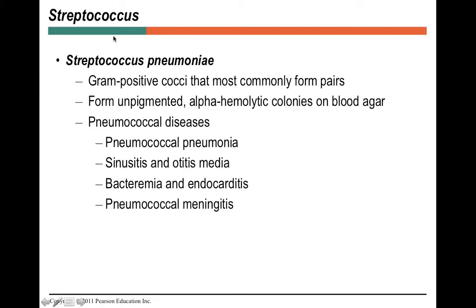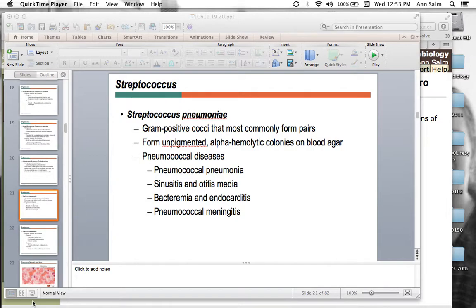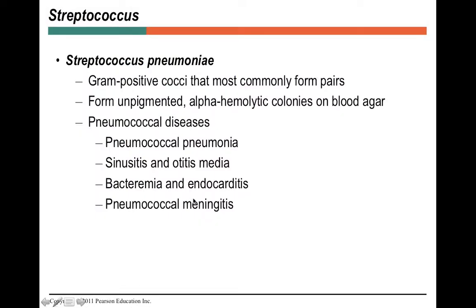Strep pneumoniae is typically considered to have a capsule. Its gram morphology is described as lancet-shaped diplococci — somewhat elongated cocci pairing end-to-end. They form alpha hemolytic colonies on agar with a mucousy appearance. This organism causes pneumococcal pneumonia, sinusitis, otitis media (ear infections), and can be a bloodstream pathogen causing bacteremia and endocarditis — infection of the heart lining.